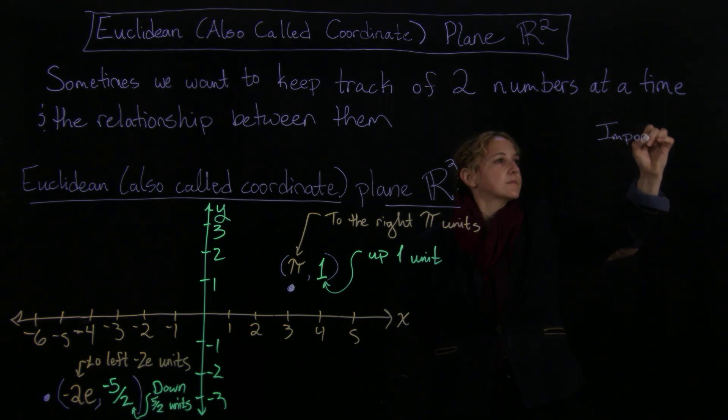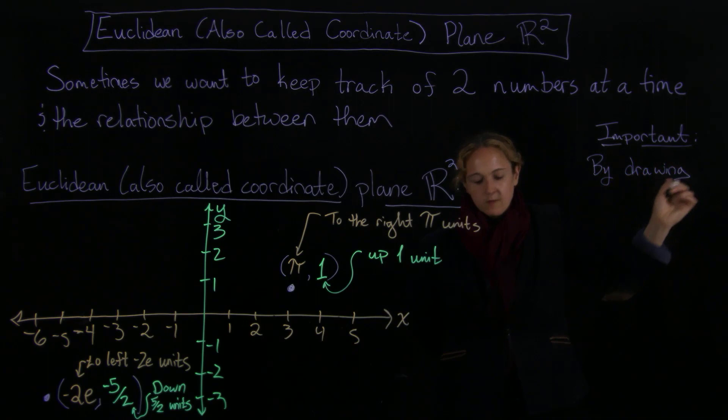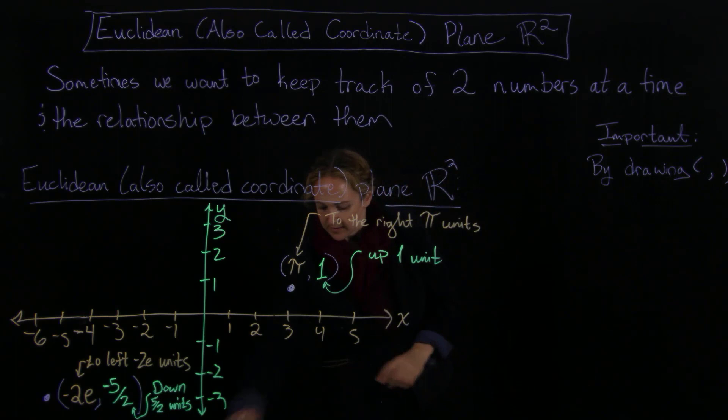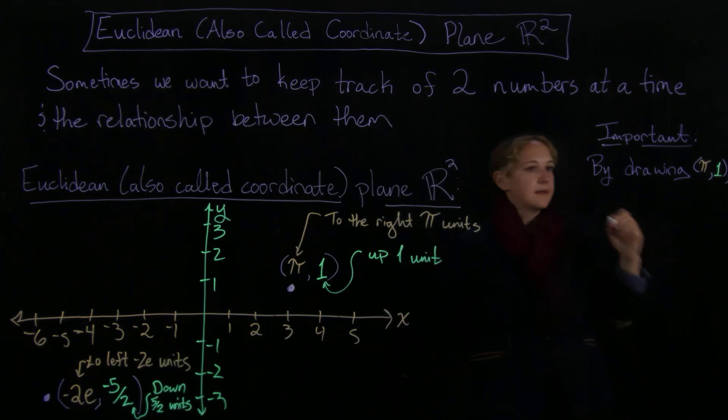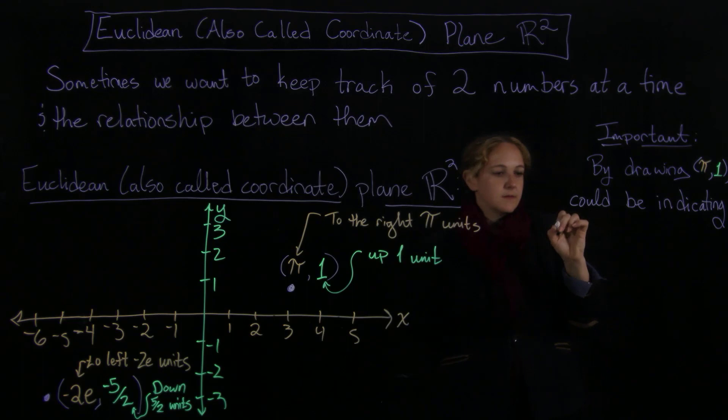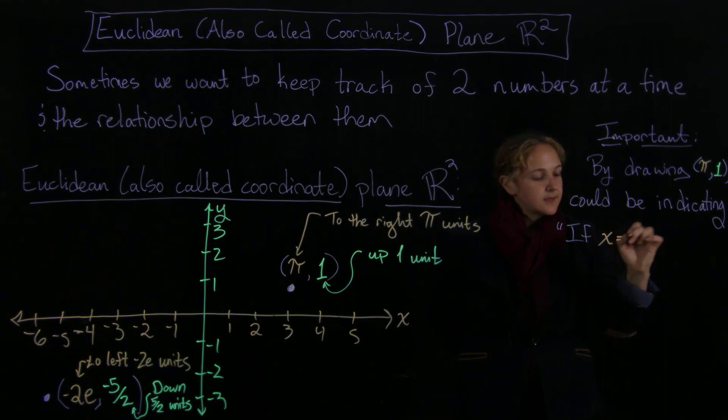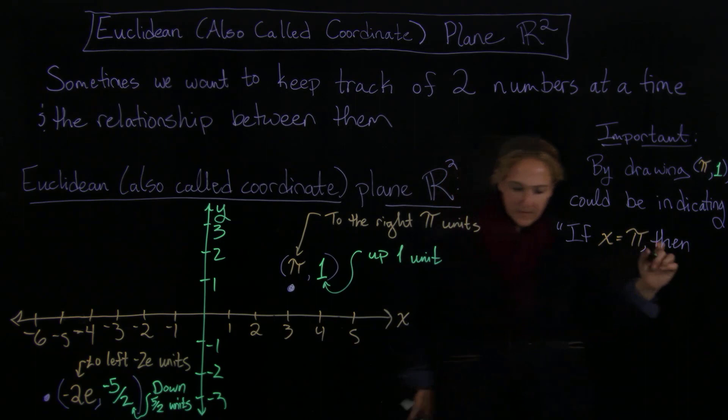Important, that by drawing the point pi one, as I did, I drew this point, so I drew a point pi one. What am I really saying? We could be indicating, so if x equals pi, then if x equals pi, then y equals one.